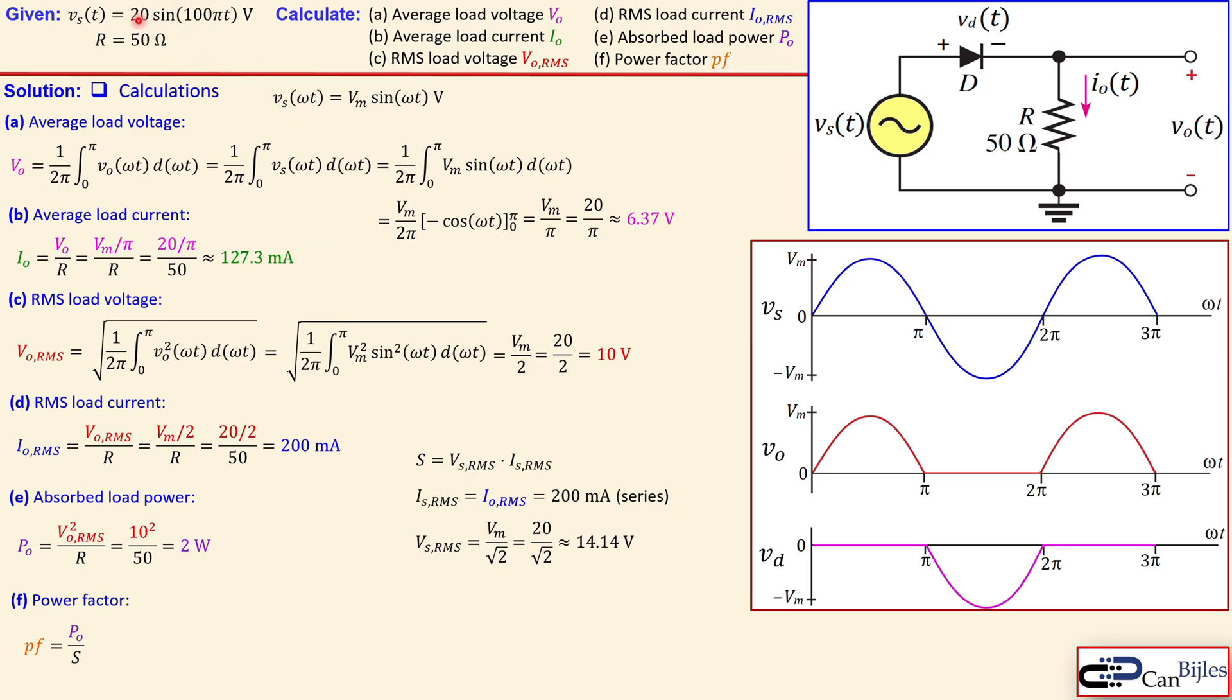And the source voltage RMS is, because this is a pure sine wave, you just take the amplitude divided by the square root of 2. That is the result of integration again in this formula, and then you get 20 over square root of 2, which will be 14.14 volts. Now we have the necessary information to calculate this apparent power S, which is then given by 2.828 volt-amperes. Now substitute that in here: we have 2 over 2.828, and that will give us 0.707 as our power factor.